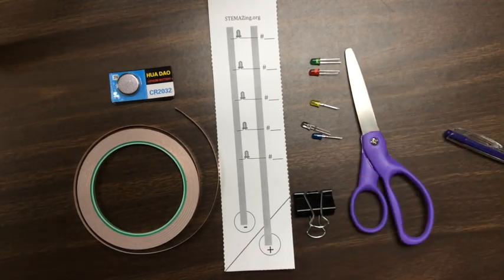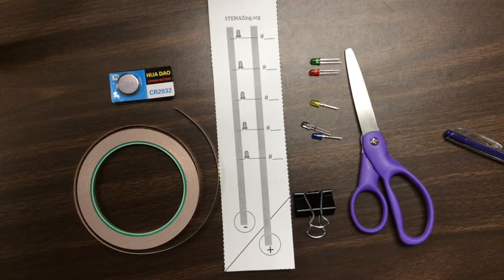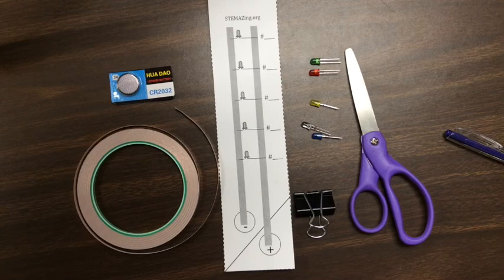You'll need LEDs in these five colors which are generally sold together: red, yellow, green, blue, and white. Additionally, you might want to buy an orange LED to go along with this set as an extension, which you can read about in the lesson.